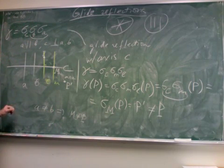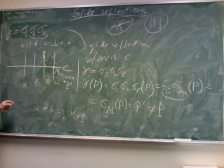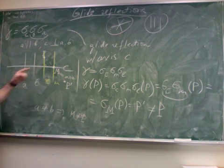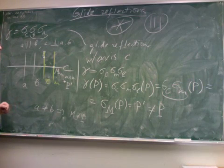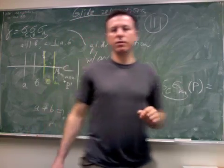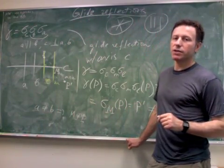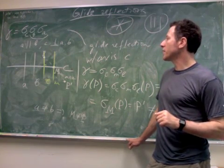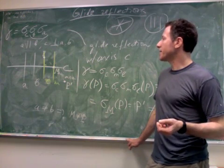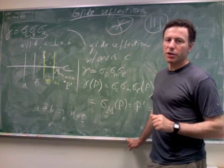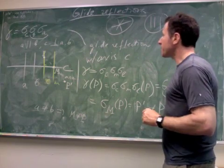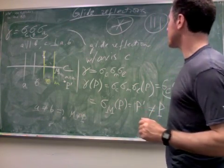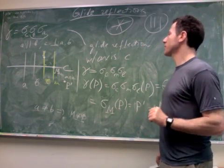We notice also that the point and its image always have the midpoint on the axis of glide reflection. What other isometry has an axis? A single reflection also has an axis, and it has the same exact property: the point and its image have the midpoint on the axis of reflection. But unlike the reflection, the glide reflection fixes no points at all — everything is moved.